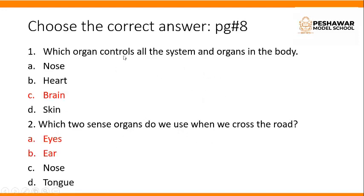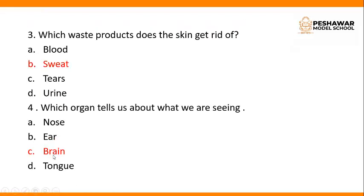Now choose the correct answer. Exercises should be done in your book, while question answers are done in your copy. Page number 8. Number 1: Which organ controls all the systems and organs in the body? Option C: brain. Brain controls all the systems and organs in the body. Number 2: Which two sense organs do we use when we cross the road? We use our eyes and ears. Number 3: Which waste products does the skin get rid of? Sweat.